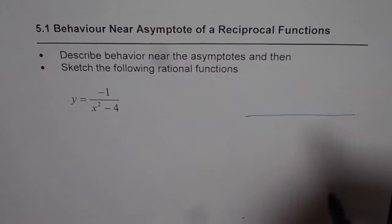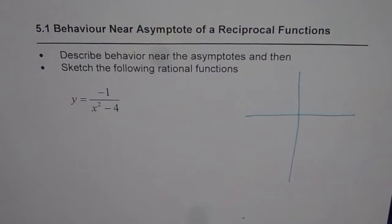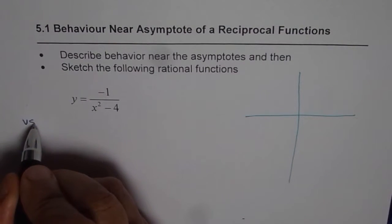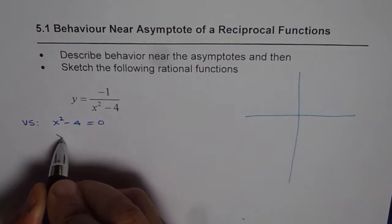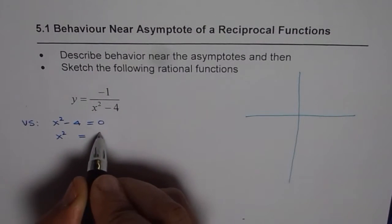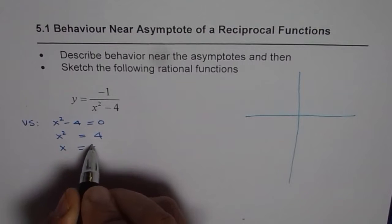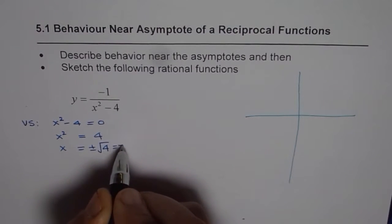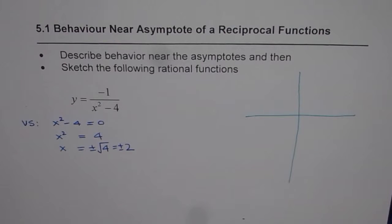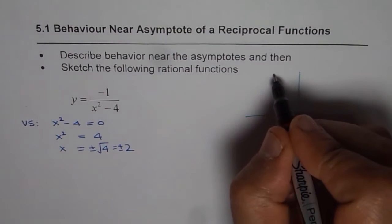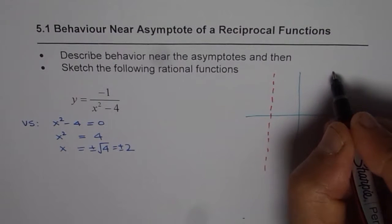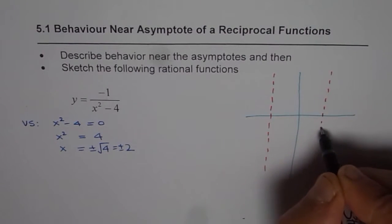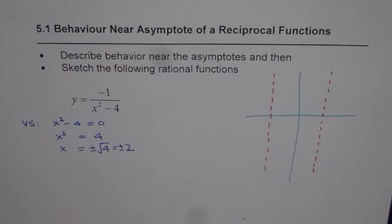We will have vertical asymptotes where the denominator is 0. So vertical asymptotes occur when x squared minus 4 equals 0, which means x squared equals 4, or x equals plus or minus the square root of 4, that is plus or minus 2. So there are two vertical asymptotes: one at x = +2 and the other at x = -2. Let me sketch these vertical asymptotes first.